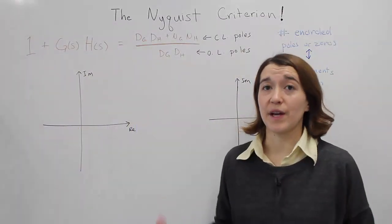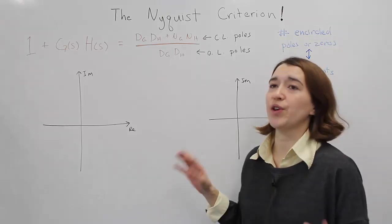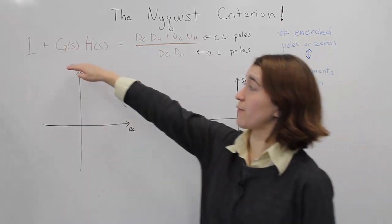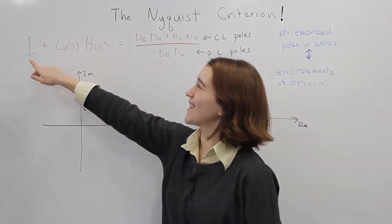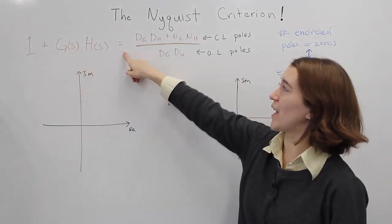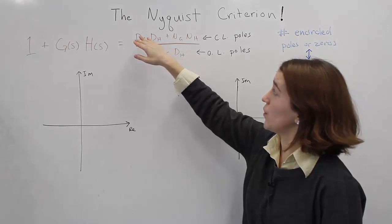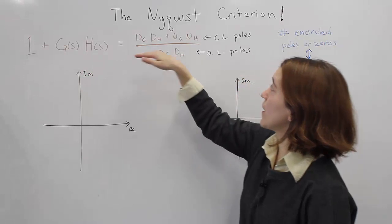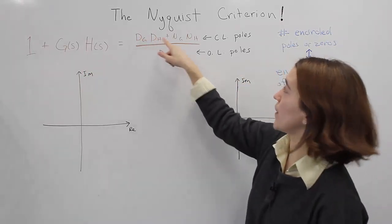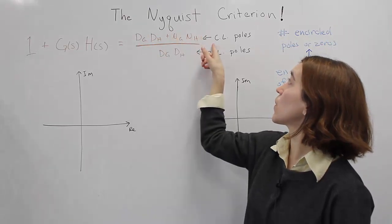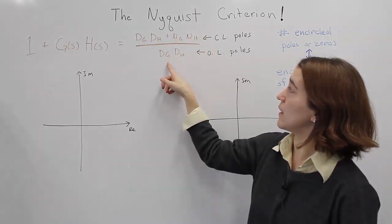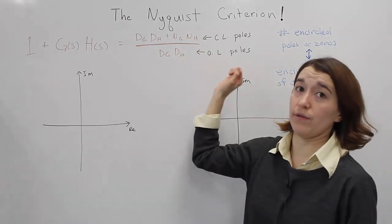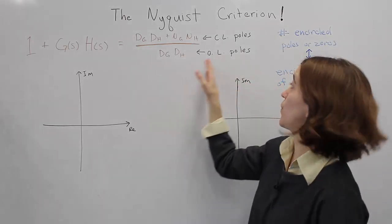Now let's look at the Nyquist criterion itself and how we use that to determine the stability of a closed-loop system. From a previous video, this basic equation can be rewritten in terms of the denominator and numerator terms of G and H. We found that the numerator, the zeros, relate to the closed-loop poles of the system, and the denominator, the poles, relate to the open-loop poles of the system.